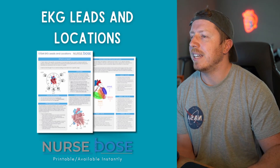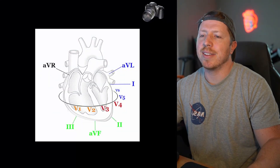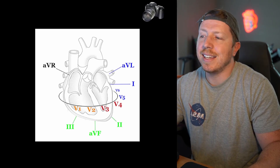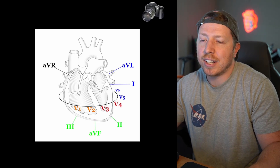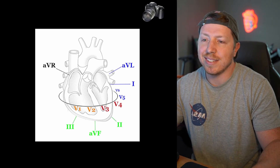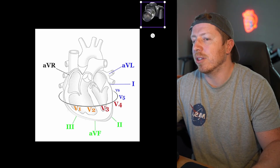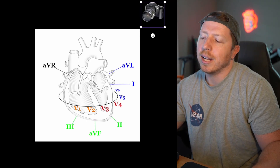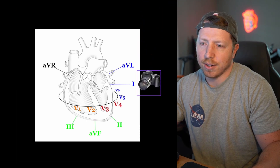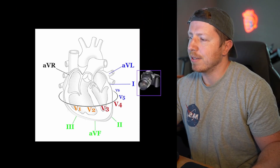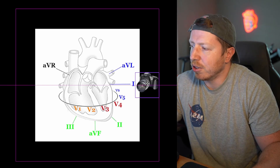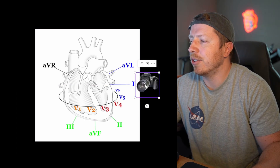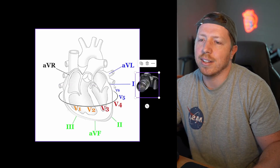To understand how this method works, we have to know what a lead is and what it does. The lead isn't the sticky thing you put on the patient — that's an electrode. The combination of different electrodes gives us different leads. What a lead actually is, is a view of the heart's electrical conduction from different angles. I like to think of leads as little electrical cameras looking in on the heart at different angles.